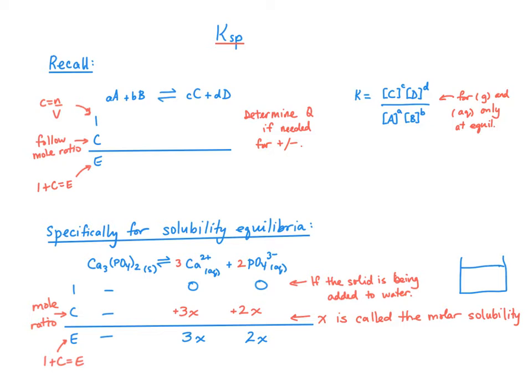Quick recall here. When we are solving equilibrium problems, we write a balanced equation, set up an ICE table: I for initial, C for change, and E for equilibrium.